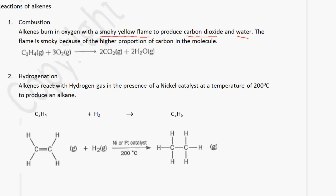The next type of reaction is hydrogenation. Alkenes react with hydrogen gas in the presence of a nickel catalyst at a temperature of 200 degrees Celsius. You need to be able to recall these reaction conditions. So for this example, we have ethene plus hydrogen, which gives you ethane, using the displayed formula C2H4 plus H2 with a nickel catalyst at 200 degrees Celsius. This is one way to convert an alkene into an alkane.